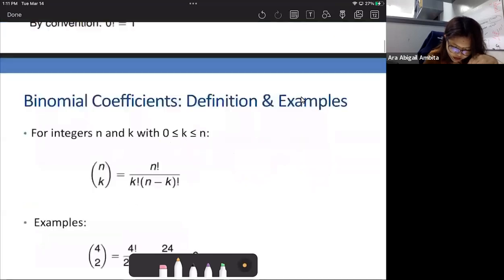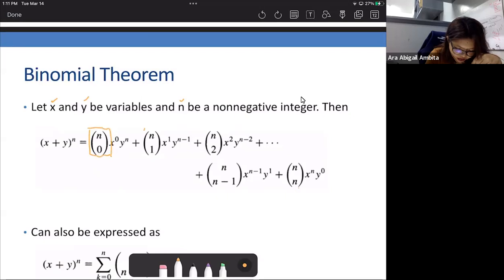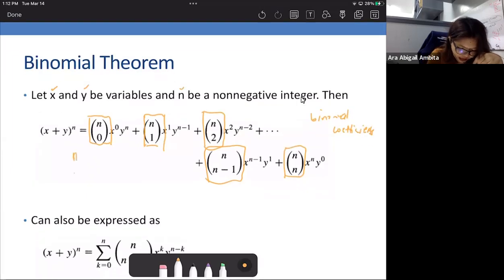So note that these are the binomial coefficients. The ones that are in orange boxes, these are the binomial coefficients. And these are in the form of n taken k. Wherein n refers here to the number of boxes that we have, and k are the number of items that we are going to select.